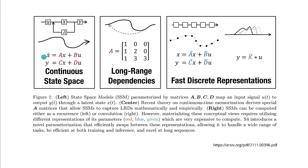We have the state space model with our A, B, C, D. The SSM can be computed either as a recurrence or as a convolution. S4 introduces a mathematical optimization for the matrix multiplication.